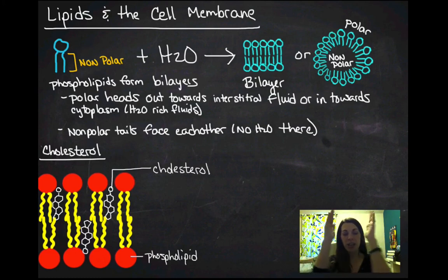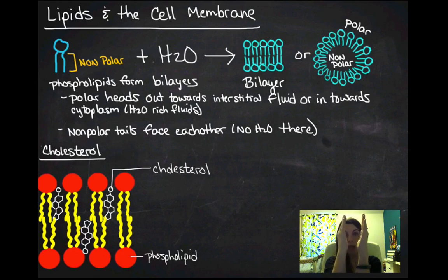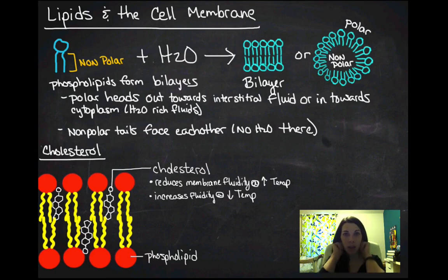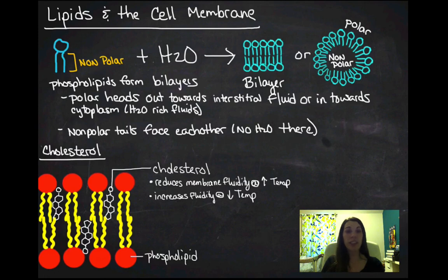So those cholesterol molecules, instead of allowing those phospholipids to kind of rigidly align, it's going to go ahead and keep some play there. So it's going to maintain elasticity when it's cold, but it's going to decrease fluidity when it's too hot. So it's going to reduce membrane fluidity at high temperatures, but it's going to actually increase membrane fluidity at low temperatures. So there's a lot of tricky questions that we ask about cholesterol and membrane fluidity. And the answer is, it helps you keep your membrane at the right fluidity level. If it's too hot, the cholesterol is going to make you more rigid. And if it's too cold, it's going to make you more fluid.